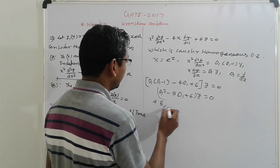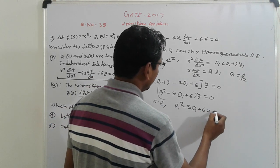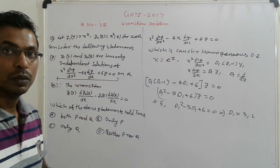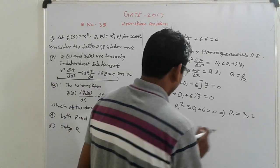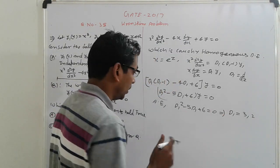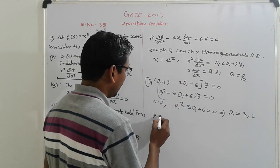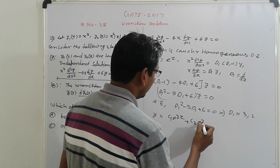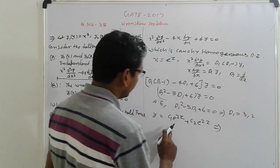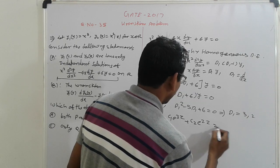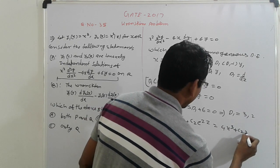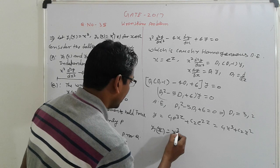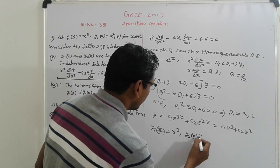This is the auxiliary equation: D1² - 5D1 + 6 = 0 implies that D1 equals 3 and 2. Now, the general solution: Y = C1e^(3Z) + C2e^(2Z). Otherwise, e^Z = X, so here we get Y = C1X³ + C2X². So now Y1(X) = X³ and Y2(X) = X².